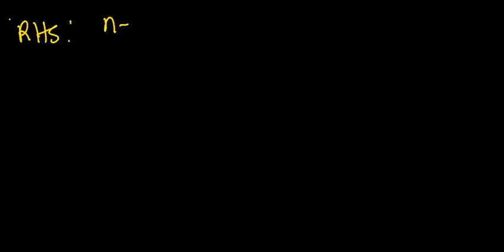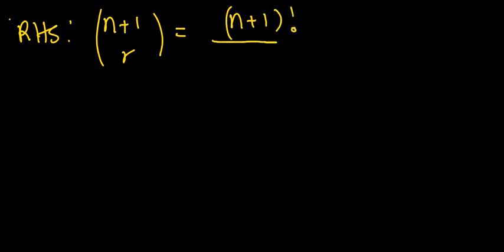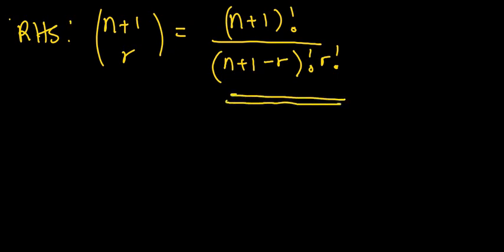Our right hand side is n plus 1 choose r. This is the same as n plus 1 factorial over n plus 1 minus r factorial times r factorial. We keep this as our right hand side, and now we move to work on the left hand side — this is where I need you to pay attention.